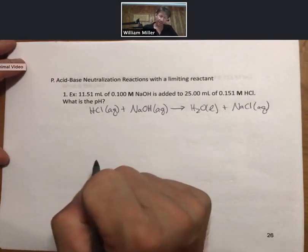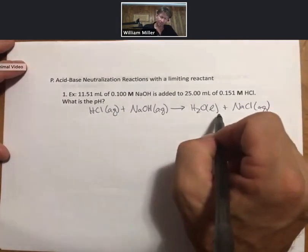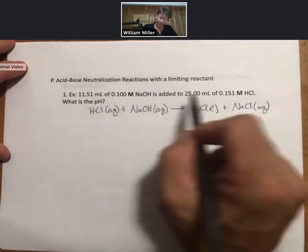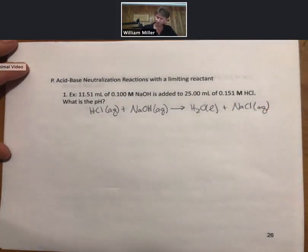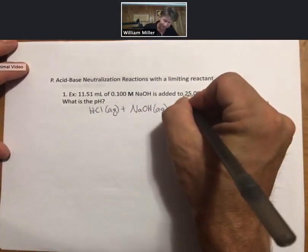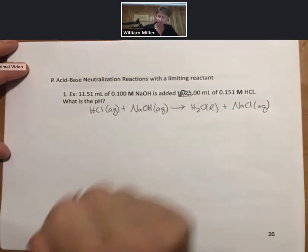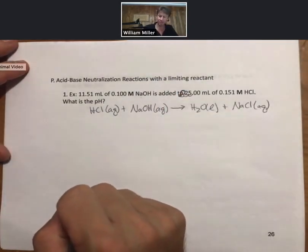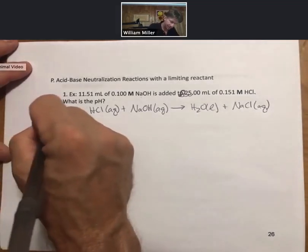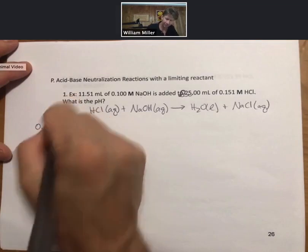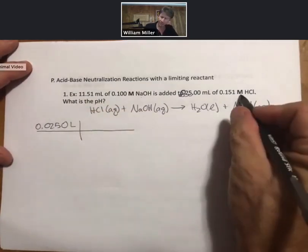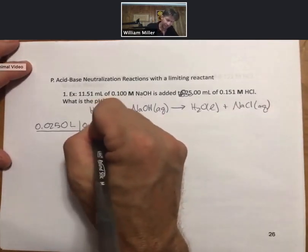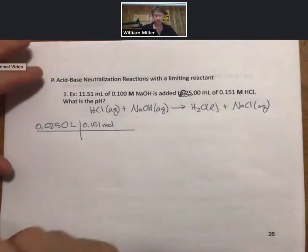This is a limiting reactant problem. All the coefficients are ones. We can find moles of sodium hydroxide and moles of hydrochloric acid. Let's start with the hydrochloric acid. I'm going to convert my milliliters into liters: 0.025 liters. Yeah, three sig figs so I add that extra zero there. That's liters. I know my molarity, 0.151 molarity is 0.151 moles of hydrochloric acid per liter.